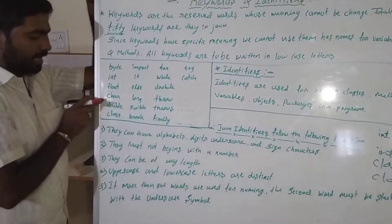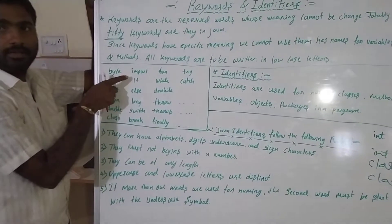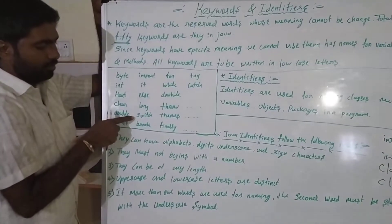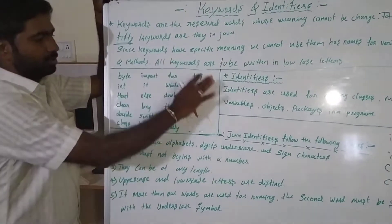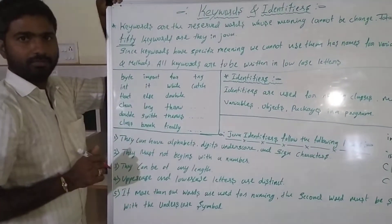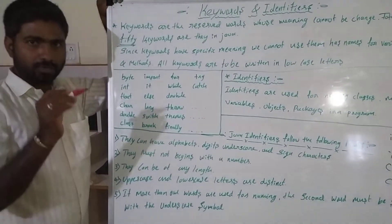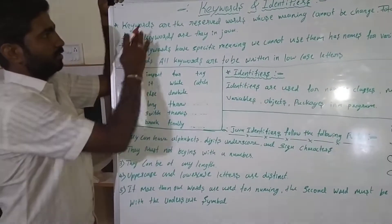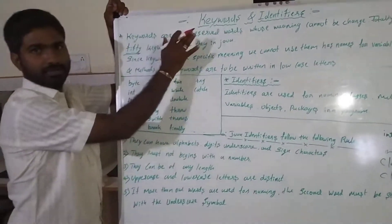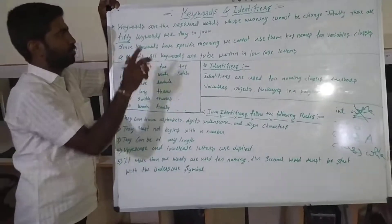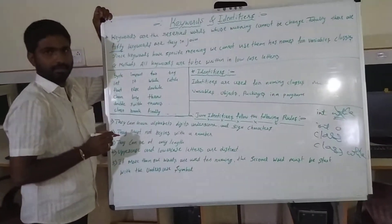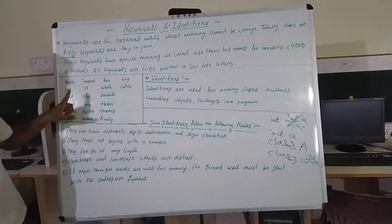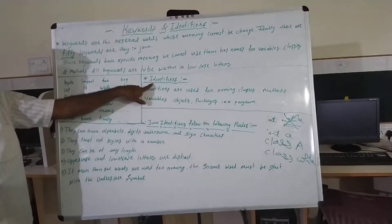Examples of keywords include: float, cat, double, clasp, import, if, else, long, switch, break. This is a total of 50 keywords, all written in lowercase. This is all about keywords.